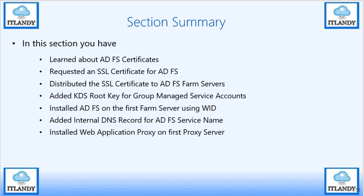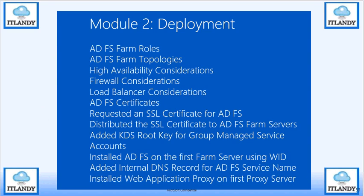To summarize this section: we learned about ADFS certificates — requesting and distributing certificates, adding the KDS root key, installing the ADFS farm, adding DNS, and installing the Web Application Proxy and establishing trust. That was the last part of module 2. Module 2 covered farm rules, topology, HA considerations, firewall considerations, load balancer, and certificates.